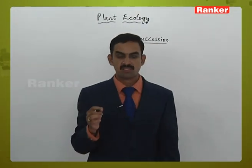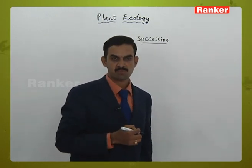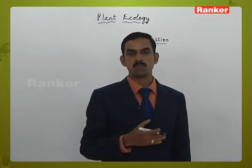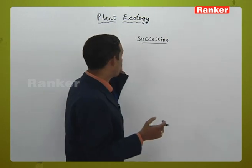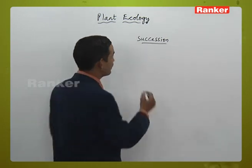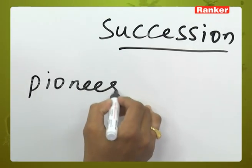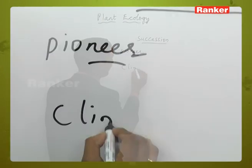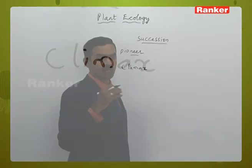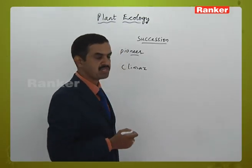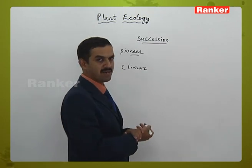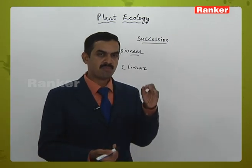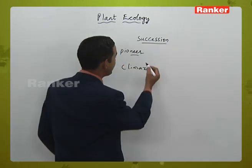Succession is a long-duration process — it may take sometimes hundreds or thousands of years to be completed. The first group of plants colonizing an area is called the pioneer community, and the group which finally gets established is called the climax community. Between the pioneer and the climax community, various groups called seral communities will appear.